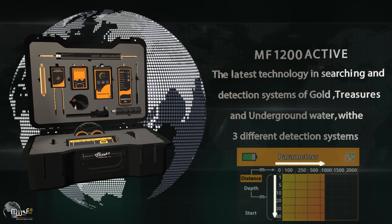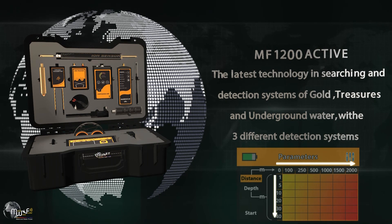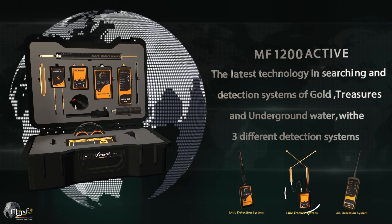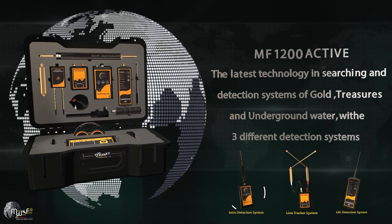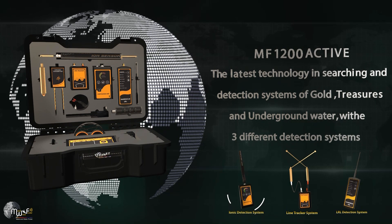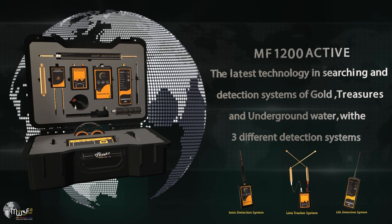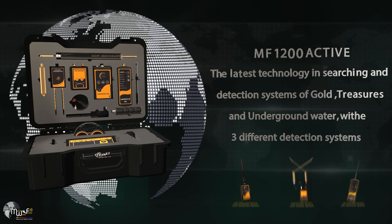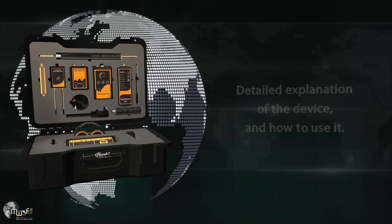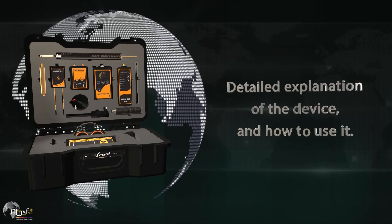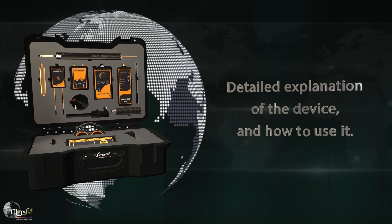With detection distances of up to 2 kilometers in front, you can operate on three different systems to confirm the locations of targets, gold, and treasures underground, ensuring precision analysis and results for target locations. Users can operate it individually using multiple systems and technologies.